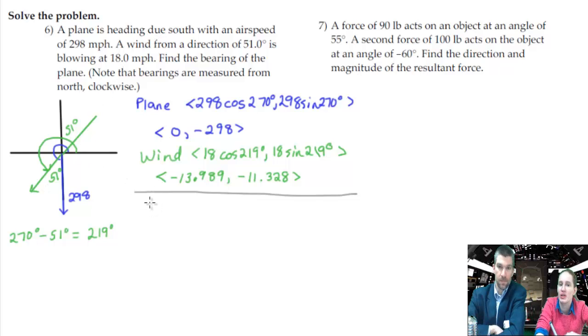All right. So what we're doing is we're trying to take into the account that the wind affects the plane. Right. It's blowing the plane in that direction. So what we need to do is add the plane and the wind together. Like literally add them together. Take the x values and add them together.